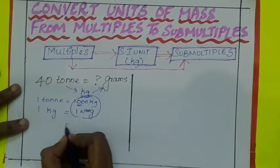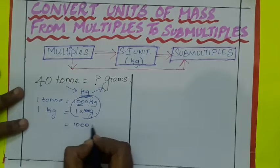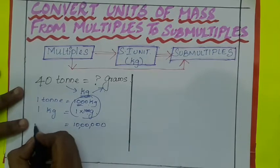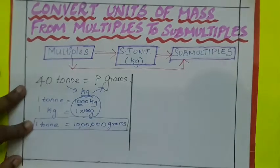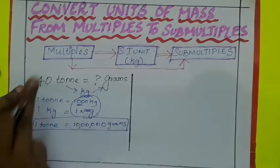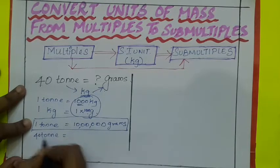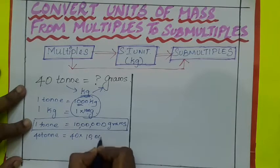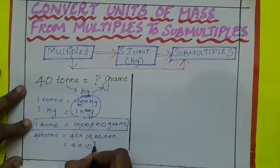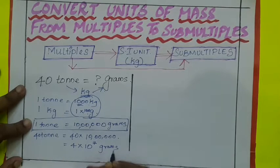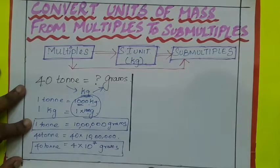Multiply both the answers so that you will arrive a formula. 1000 into 1000 equals 10 lakhs. So 1 ton is equal to 10 lakh grams. You have arrived a formula. Now substitute the given values in this formula. 40 ton is equal to 40 into 10 lakhs. So totally how many zeros are there? 7 zeros. So 10 power 7 grams. We have solved this problem by using this formula.